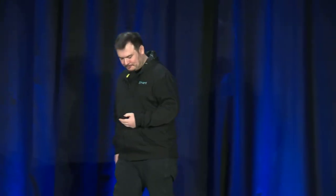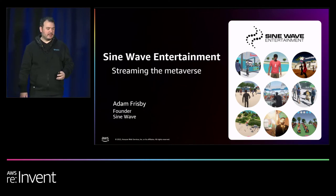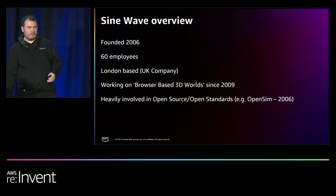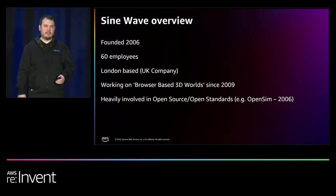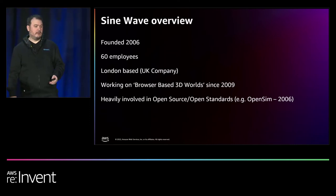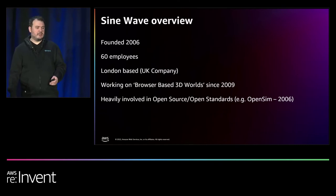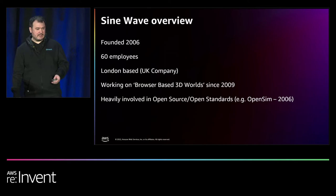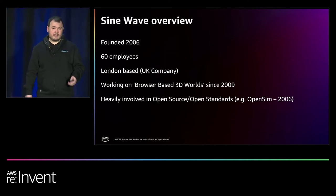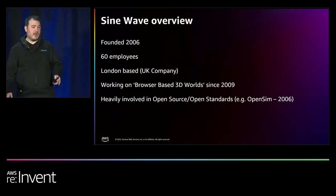Thank you for that introduction. I'll tell you a little about us first, because I think it sets the scene for how AppStream has been able to truly transform our business. We are a relatively mature 3D virtual world company — we've been around since about 2006, so 15 years. We have about 60 employees and we're based out of London. We've been working on delivering robust browser-based 3D virtual worlds for a long time — we first did it back in 2009. We're also a big proponent of open standards and open source.